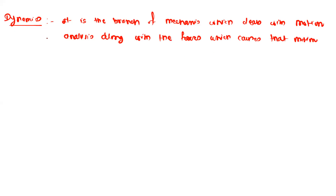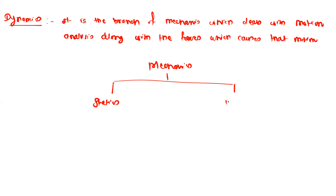Dynamics is the branch of mechanics. Mechanics is subdivided into two parts: the first is statics and the second is dynamics. Statics deals with the force analysis when the object is stationary, that is, there is no motion. In dynamics, we deal with objects which are in motion.